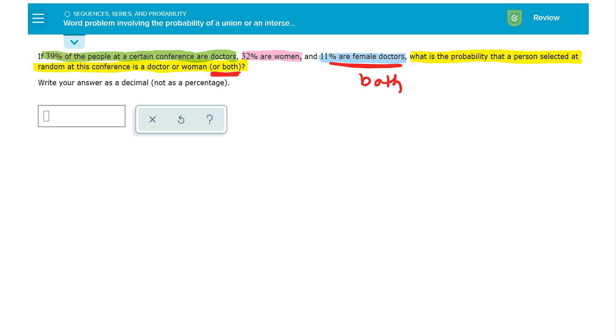Now, when you're doing the probability and they're asking you to find the probability that a person selected is a doctor or a woman or both, you're basically looking for the probability of a doctor or the probability of a woman.